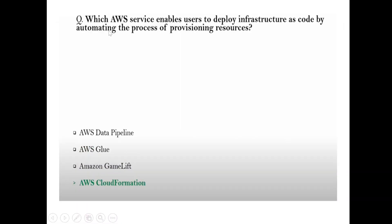Question: Which AWS service enables users to deploy infrastructure as code by automating the process of provisioning resources? Whenever you see 'infrastructure as code' and 'automating provisioning,' you have to select CloudFormation.